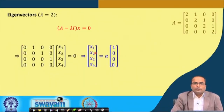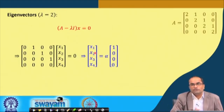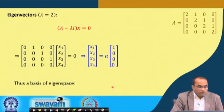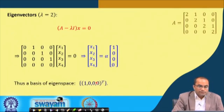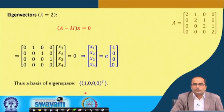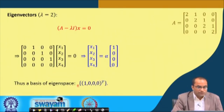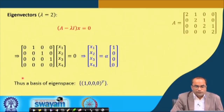This shows that even though the eigenvalue 2 was repeated 4 times, we are getting only one linearly independent eigenvector. In general, if the eigenvalue is repeated several times we cannot directly claim how many linearly independent eigenvectors we will get — it depends on the matrix. The basis of the eigenspace here is just the single vector (1, 0, 0, 0) transpose.